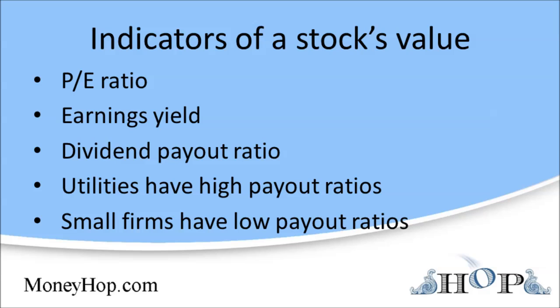However, the earnings yield is different from the interest yield you receive from a bond. If a bond yields 7%, for every $100 you invest, you can expect interest payments that will total $7 over the course of a year. However, if a stock has an earnings yield of 10%, you almost certainly won't get $10 in payments per year for every $100 you invest. In fact, you'll be lucky if you get half of that, and you may not get any current income from the stock.